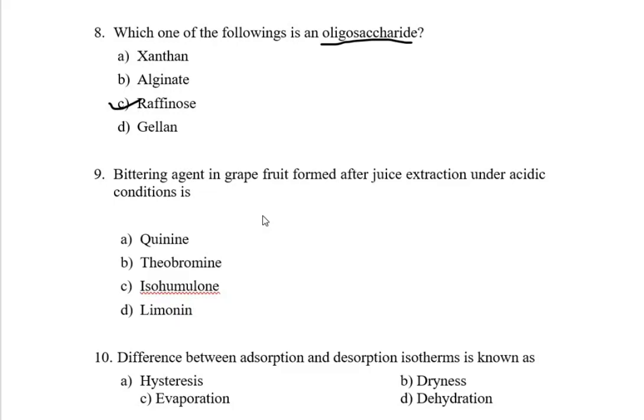Option B, theobromine: theobromine, also known as xantheose, is a bitter alkaloid of the cacao plant that is found in chocolate as well as a number of foods. Option C, isohumulone: isohumulones are chemical compounds that contribute to the bitter taste of beer. So isohumulone is responsible for bitter taste of beer.